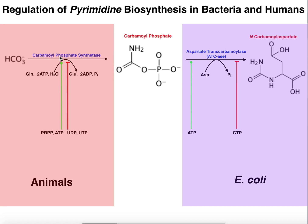ATP is going to activate this enzyme as well. The body — or at least cells — want a natural way to balance purines and pyrimidines, because having too many of one is not ideal. Since this enzyme is for pyrimidine synthesis, if you have lots of ATP floating around, presumably you have a lot of purines and perhaps not enough pyrimidines. So ATP activates this enzyme to jumpstart pyrimidine biosynthesis and bring pyrimidines up to par with purines.